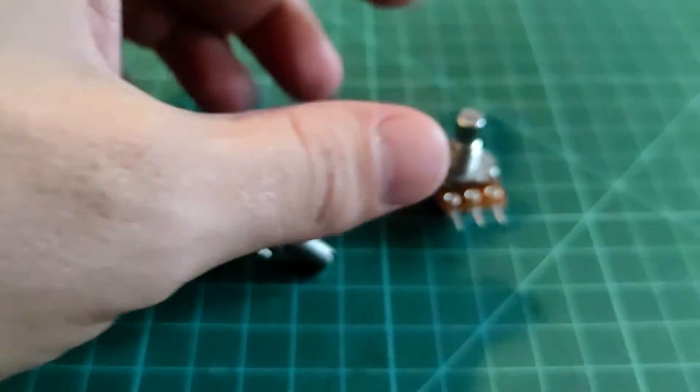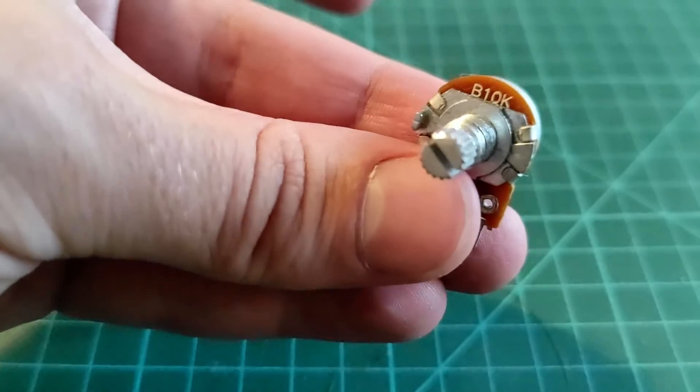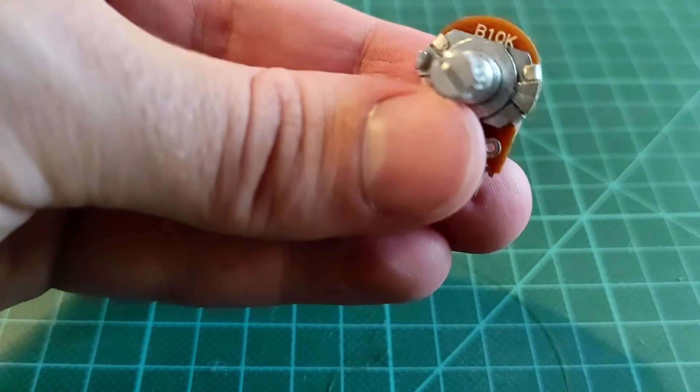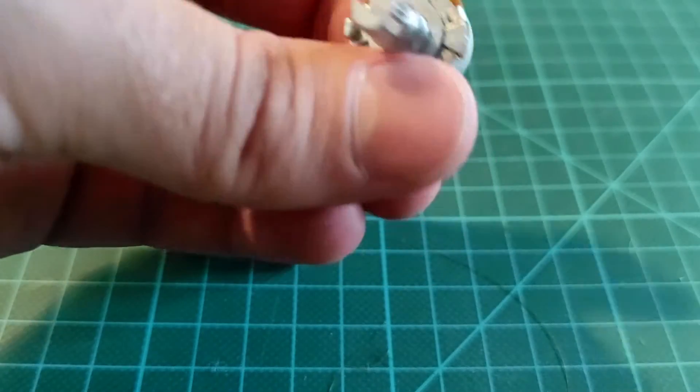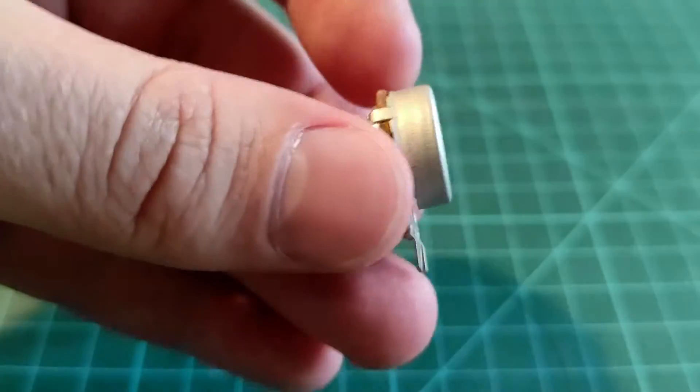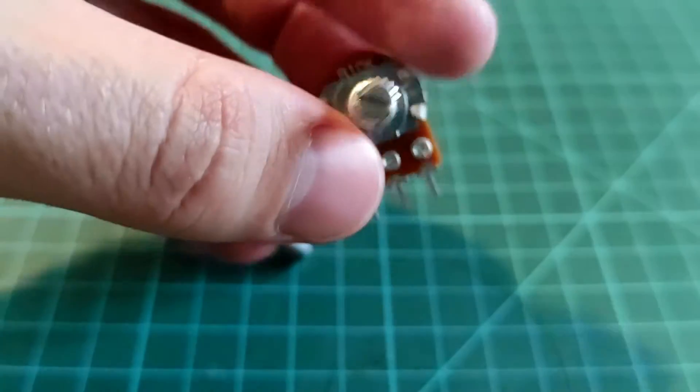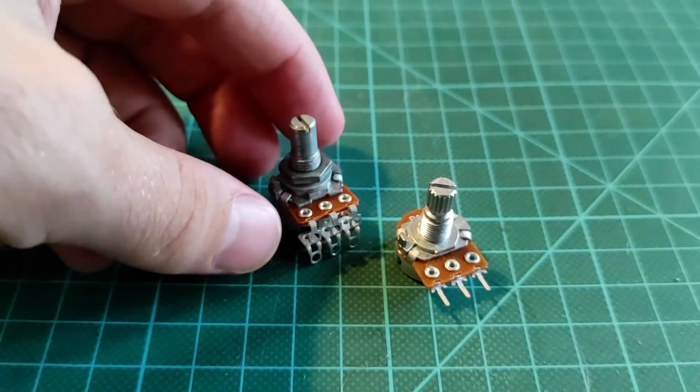We're going to measure this later in case it doesn't have anything on it. This on the other hand is B, 10k, so it's 10,000 ohms. But in any case, B is a linear and A is logarithmic, but we're going to measure it too.